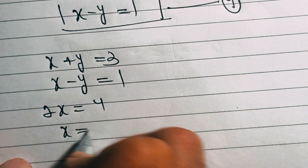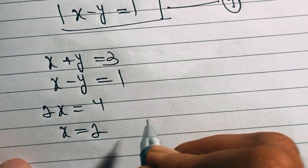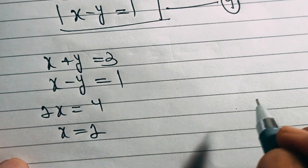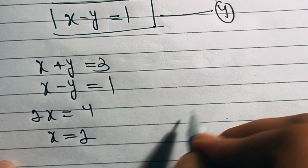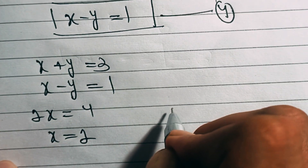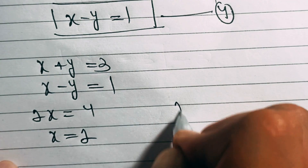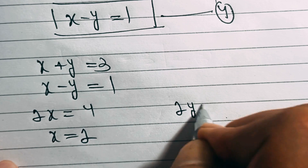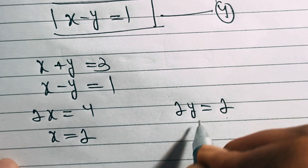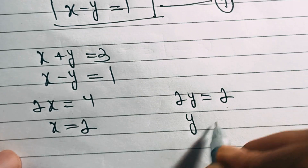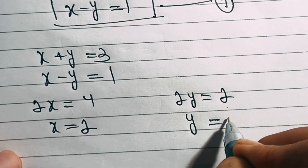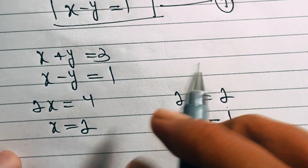If we add equations three and four, we get 2x equals 4, so x equals 2. If we subtract equation four from equation three, we get 2y equals 2, so y equals 1. This is our final result.